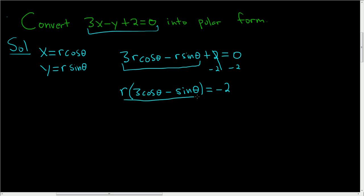Finally, we'll divide by 3 cosine theta minus sine theta, and then divide the other side as well by 3 cosine theta minus sine theta.